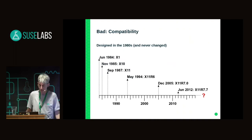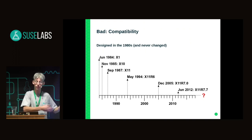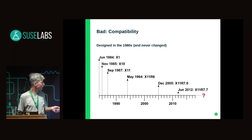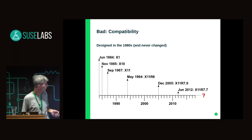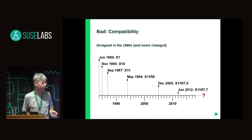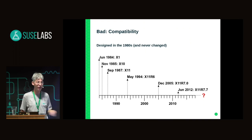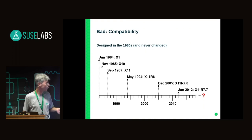What's bad is compatibility. It was designed in the 1980s and it never really changed — it was extended, but the design decisions were never reviewed. The development pace has gone down. The first interval between X1 and X10 took one year. Then you have X11, revision 6, revision 7.0, and there's no big difference between 6 and 7 — it was mostly source code reorganization. And since 2012 there's been R7.7 and nothing. It's 2018 now. If we kept the original pace, we would have something like X100.